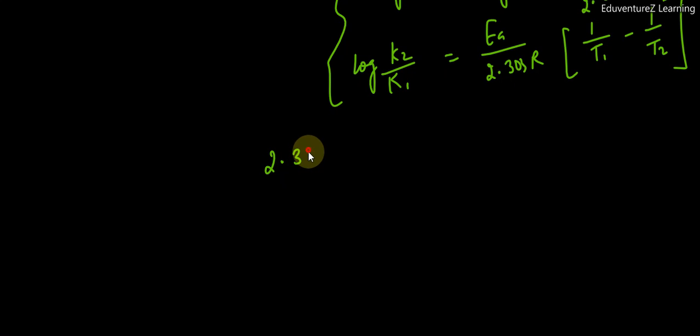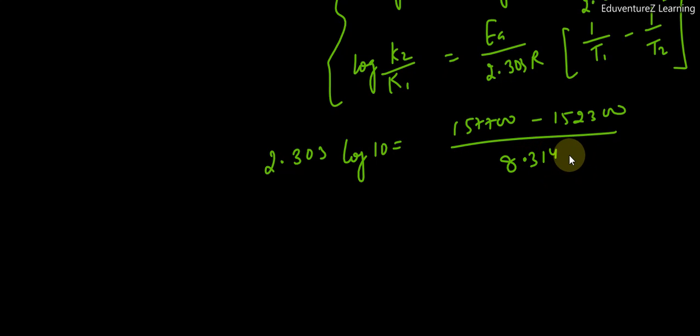2.303 log 10 equals to 157700 minus 152300 by 8.314 into T. And if we have to find the temperature value, T equals 5400 by 8.314. Log 10 value is 1, so this becomes 2.303.